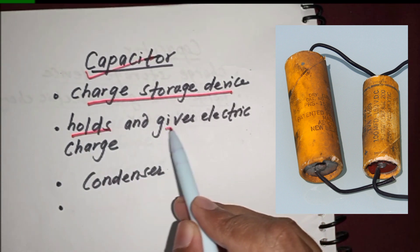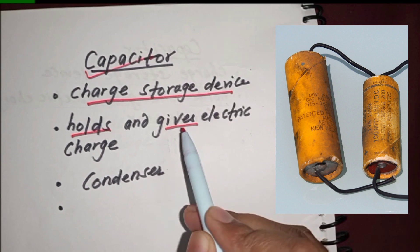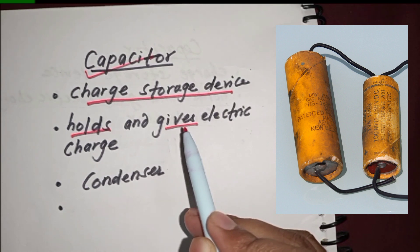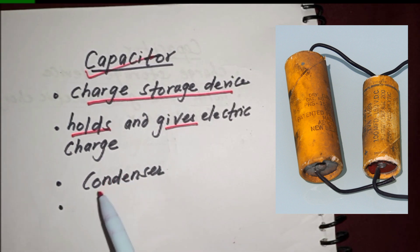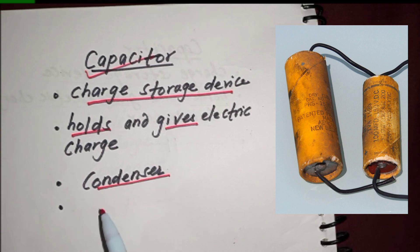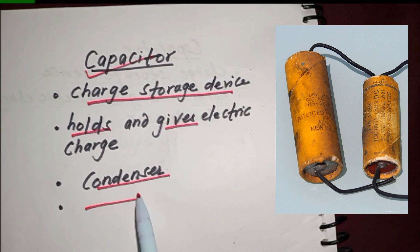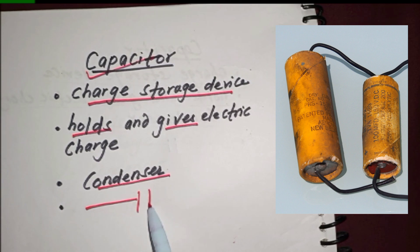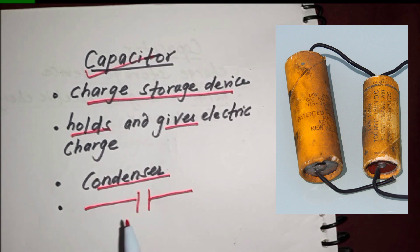The capacitor gives that electric charge to the circuit whenever it is necessary. In earlier days, a capacitor was called a condenser. The symbol of a capacitor in an electrical circuit is drawn like this.